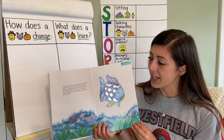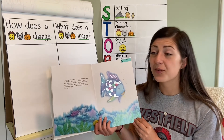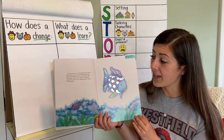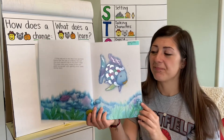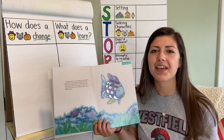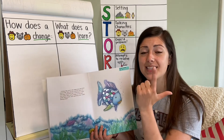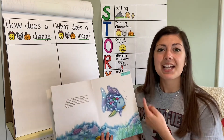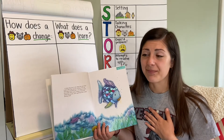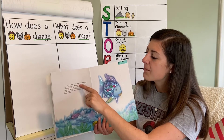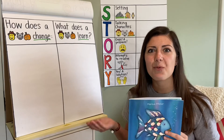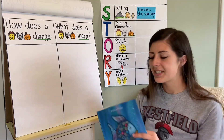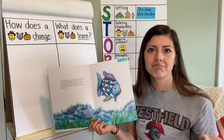A long way out in the deep blue sea, there lived a fish — not just an ordinary fish, but the most beautiful fish in the entire ocean. His scales were every shade of blue and green and purple with sparkling silver scales among them. I need to stop and think about my skills when I'm reading. I can add to my story chart — the setting of our story is in the deep blue sea, and I'm going to say it's daytime because my illustration shows a really bright picture.